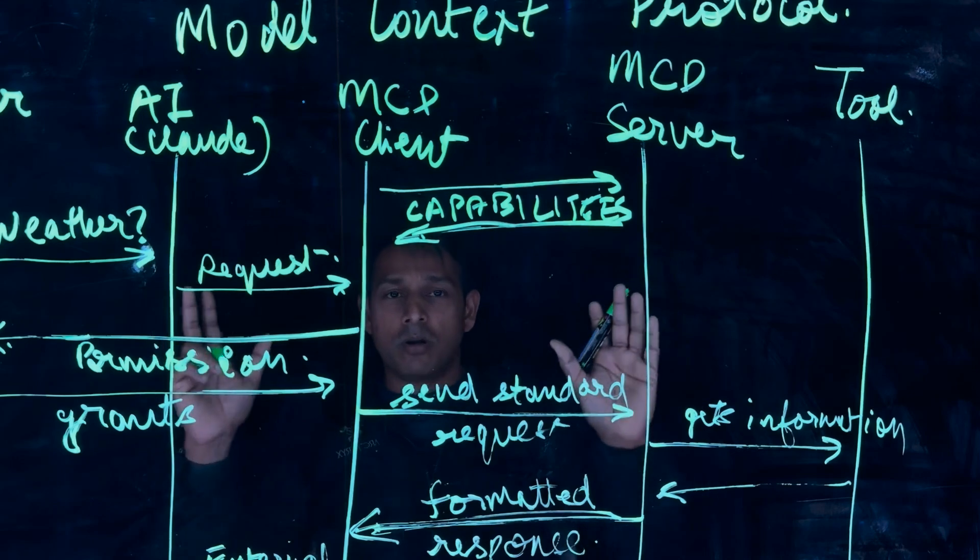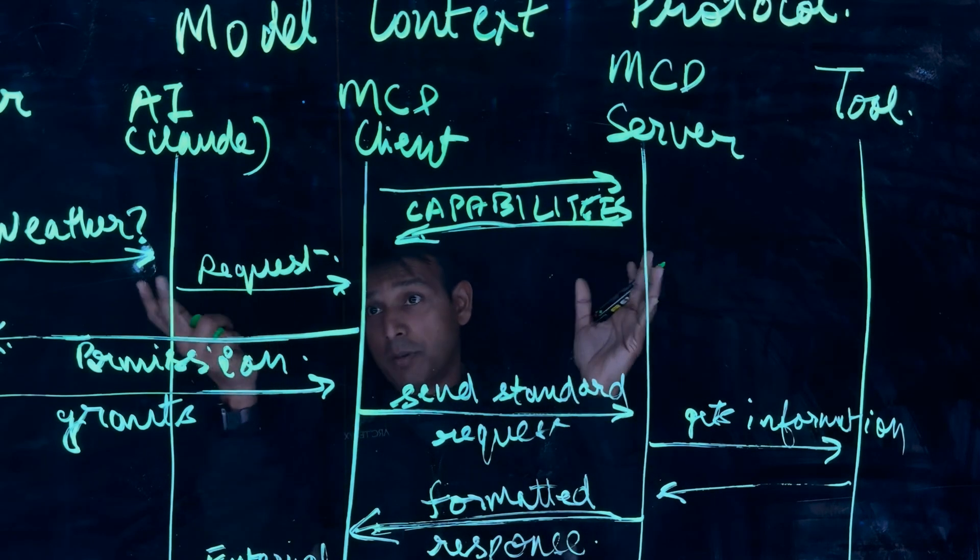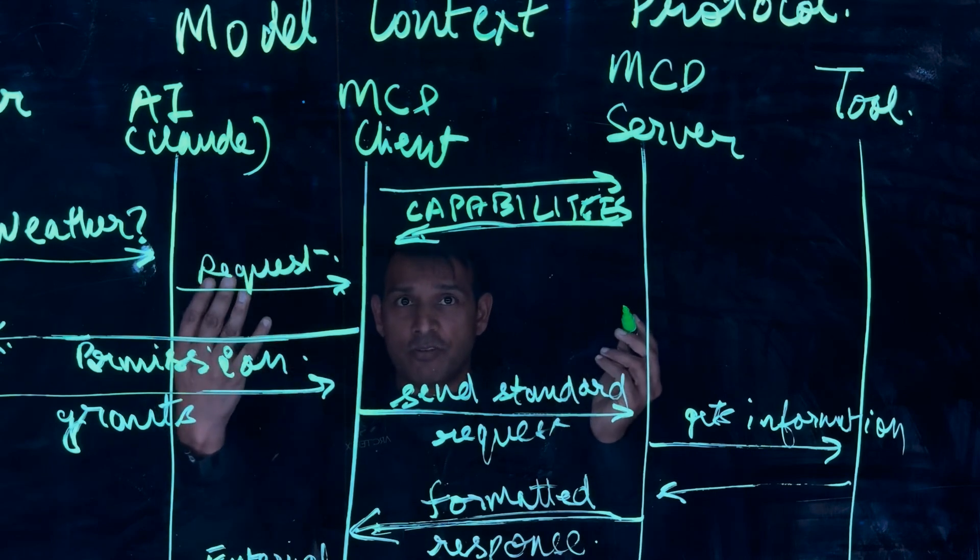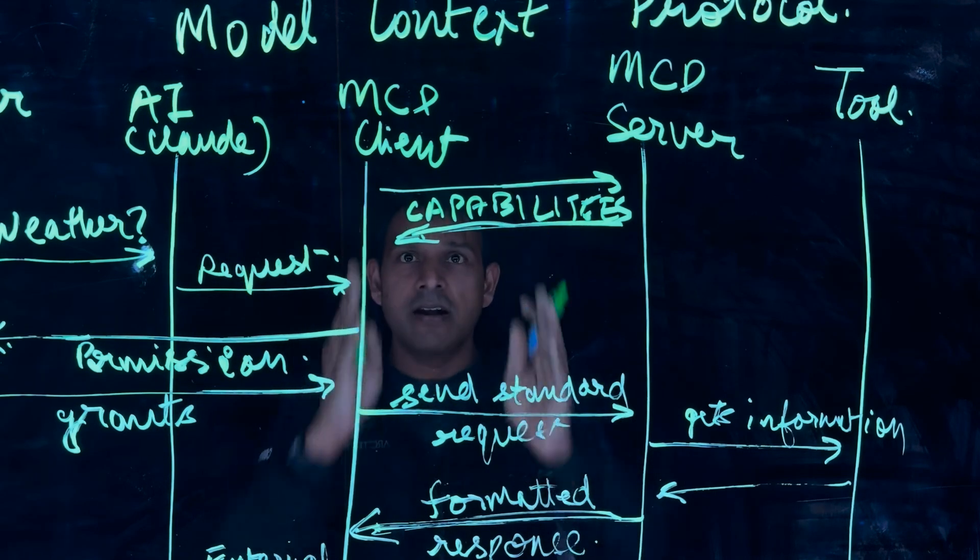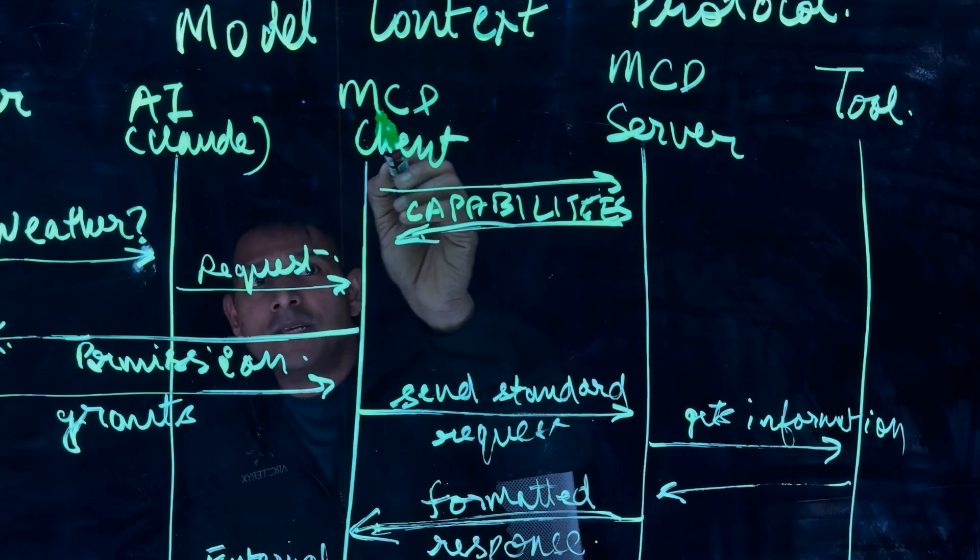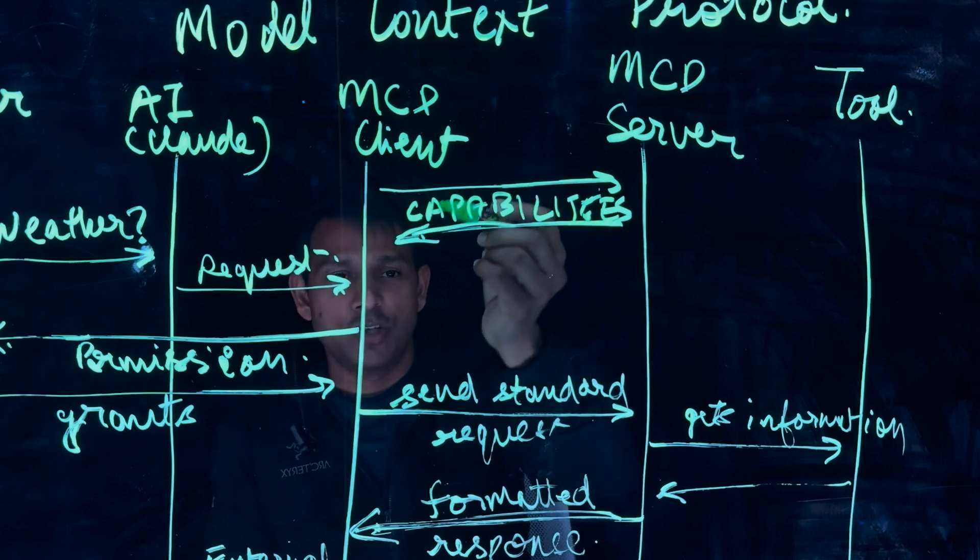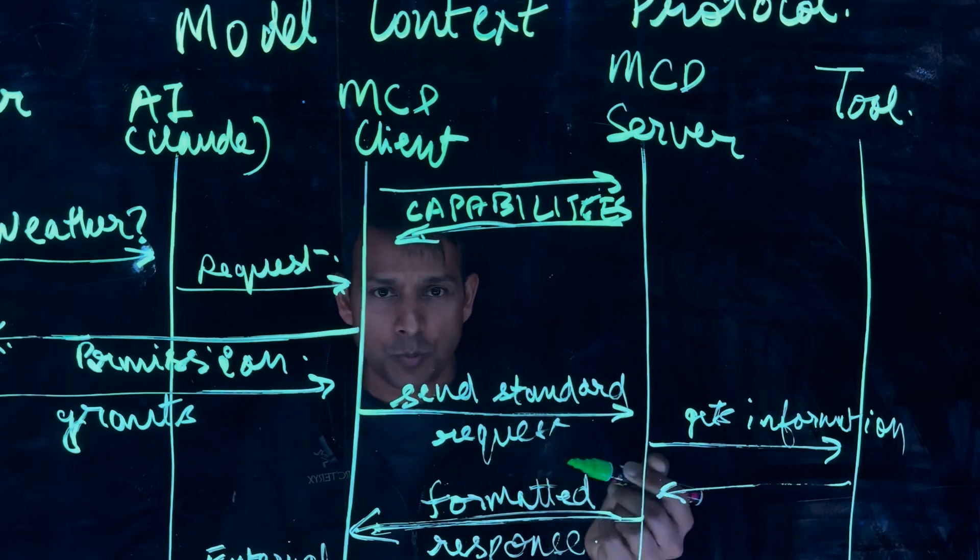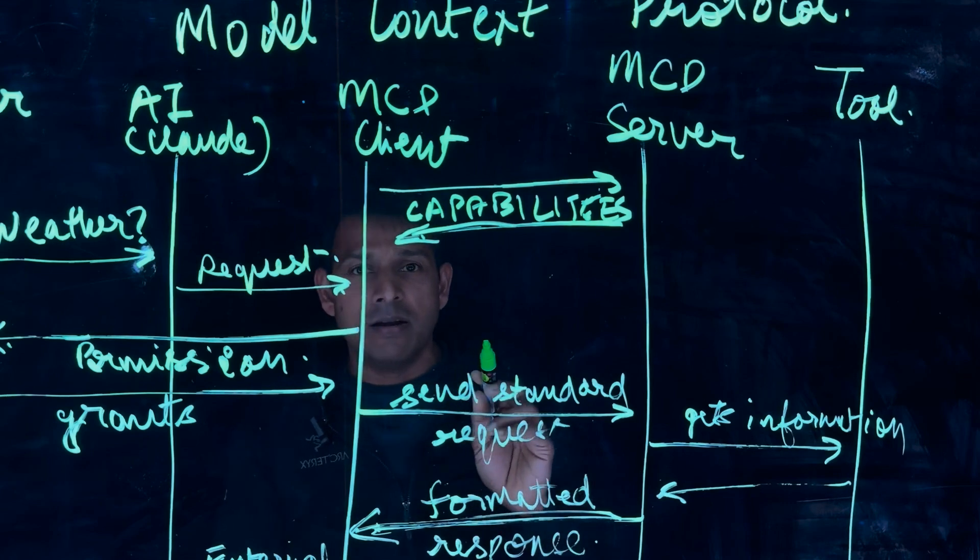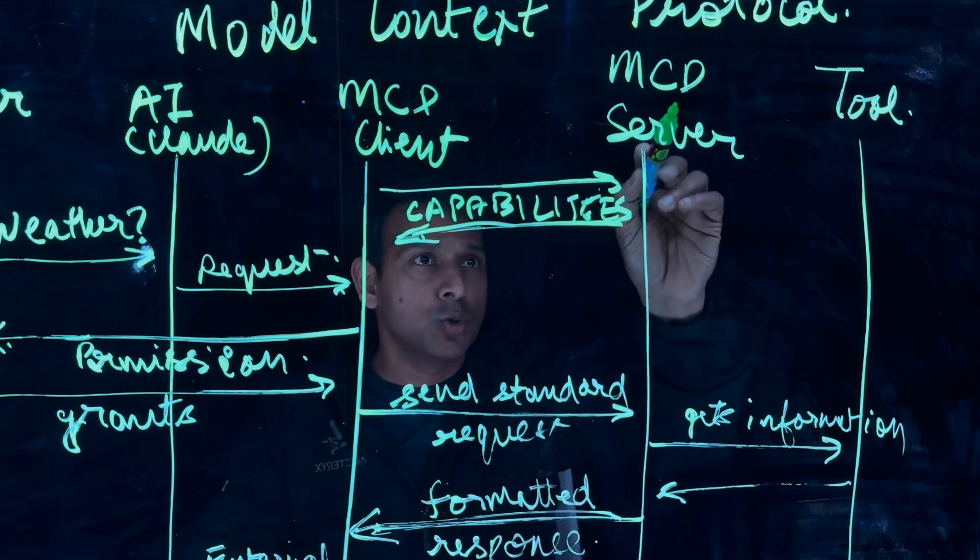So if you think about a lot of information going back and forth here in a mermaid chart for a simple query like what is the weather in San Francisco. But this standardization can accelerate innovation. All of these pieces here is standardized from a capability discovery, registration, what is the format to request, what is the response, tool discovery, all of that.